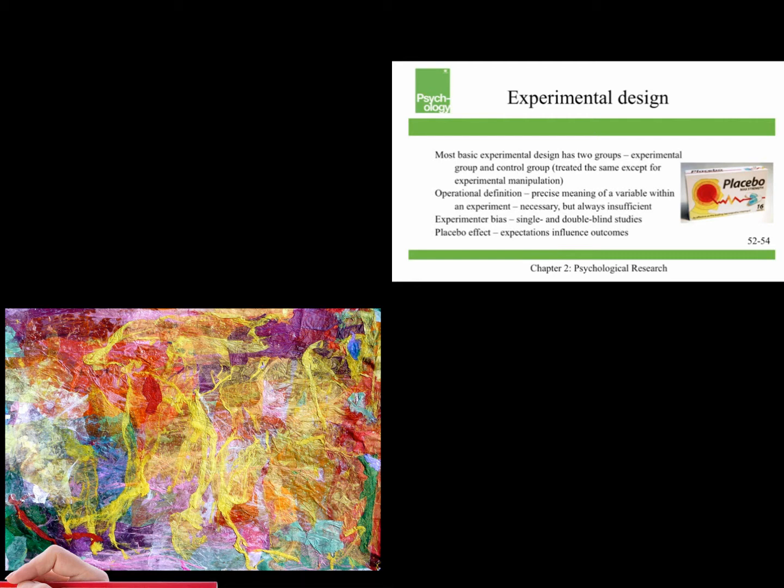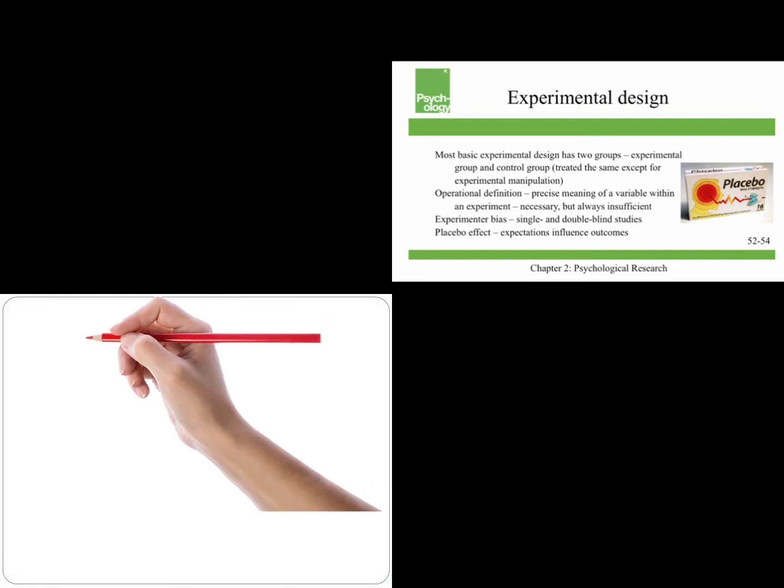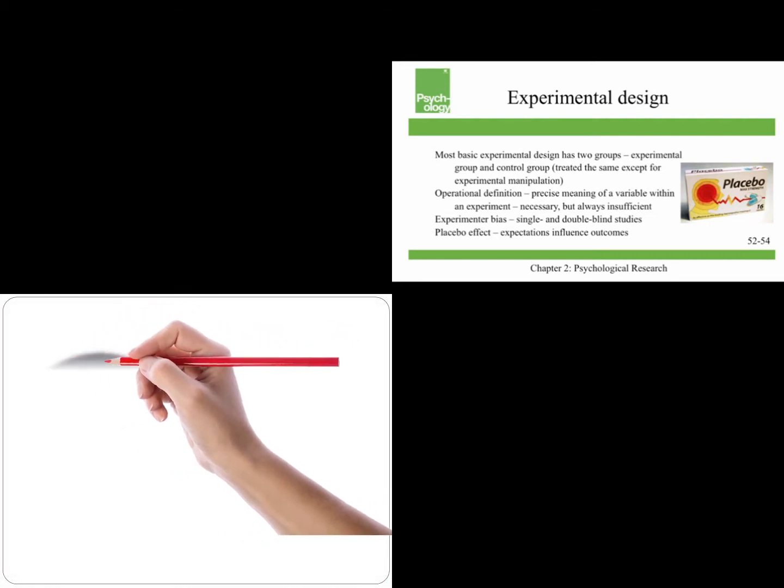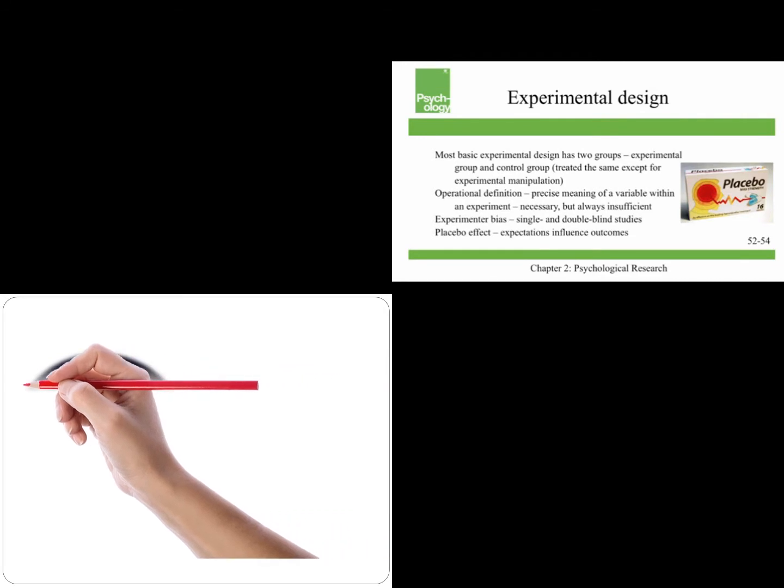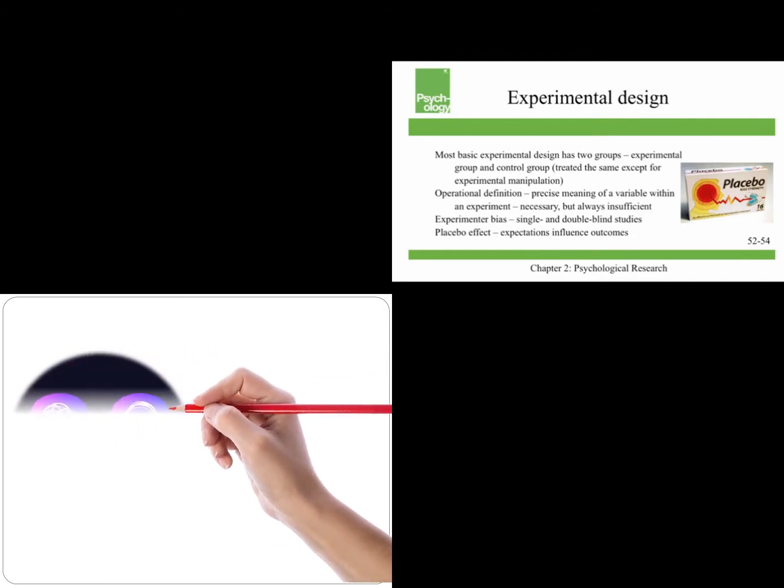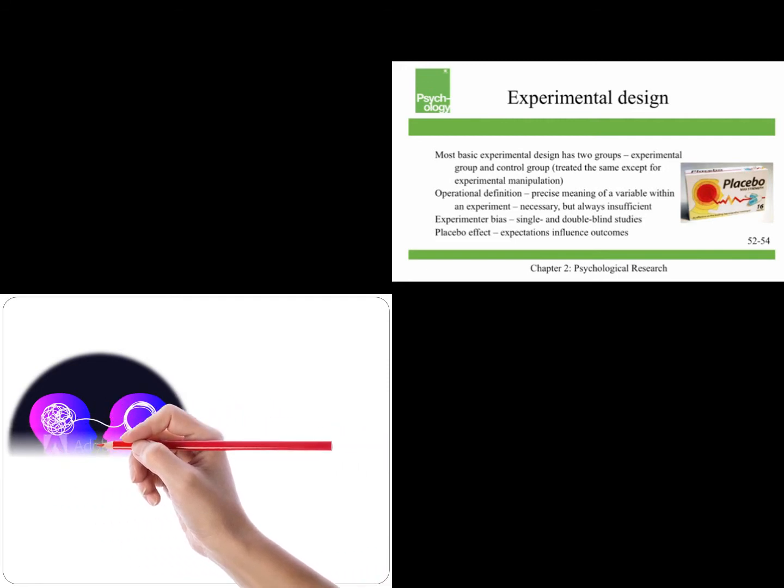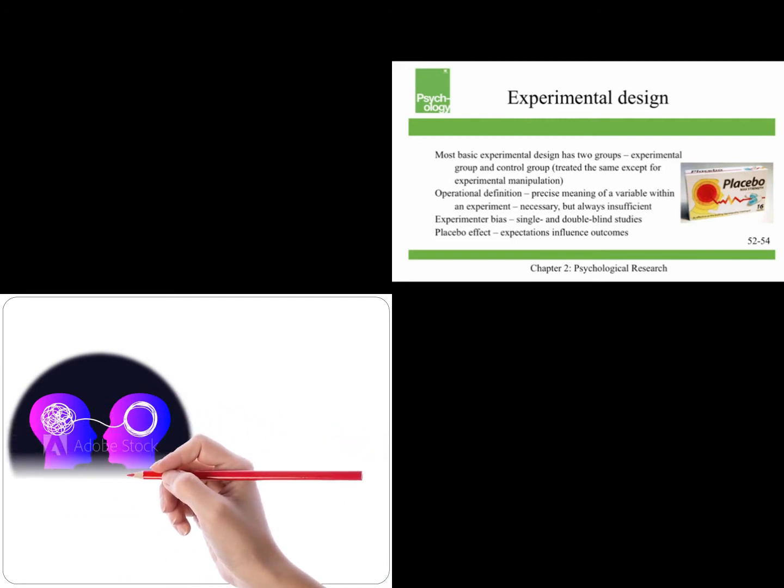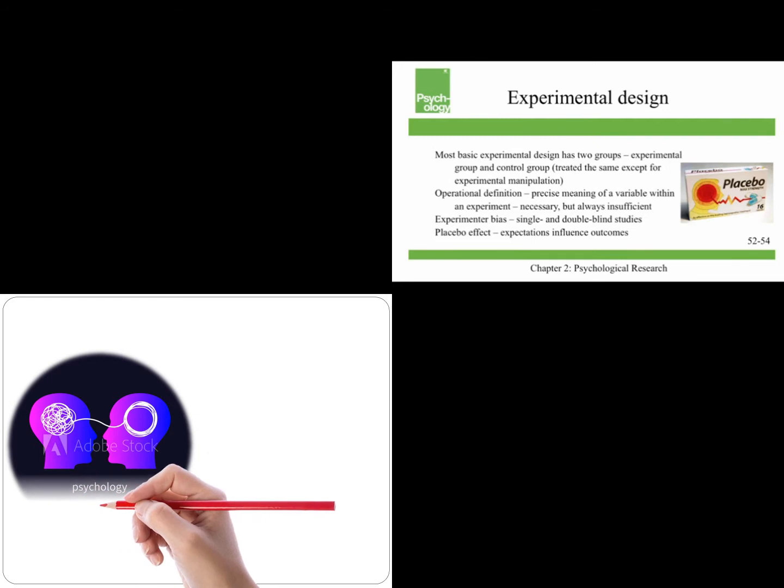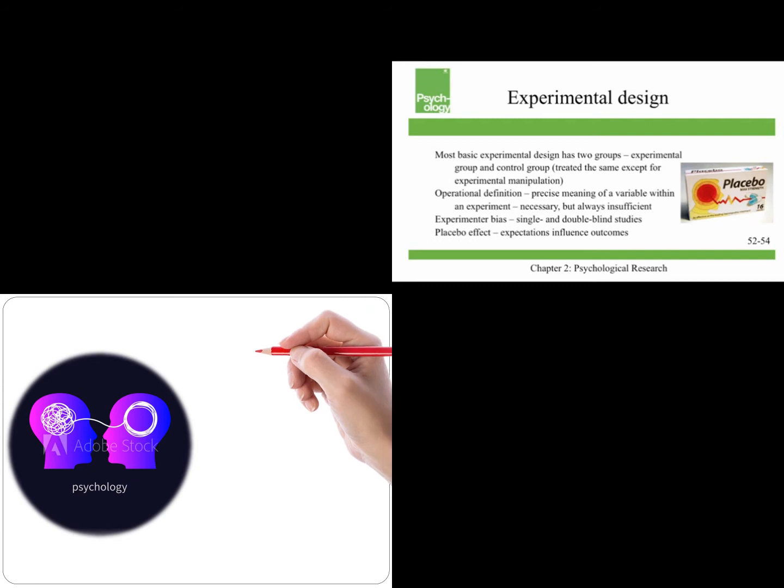An operational definition is the precise meaning of a variable within an experiment. Now operational definitions are necessary, but they're always insufficient. So if we were studying something like violent behavior, we might include hitting and kicking, but not abusive verbal behavior, which is certainly a violent act. But again, that's why these are necessary, but always insufficient. Where do you draw the line at? What is a violent act or violent behavior?